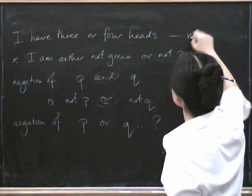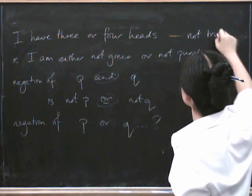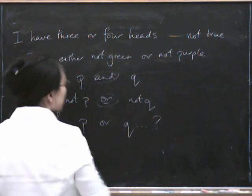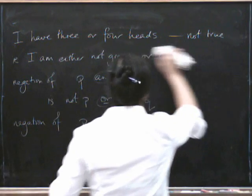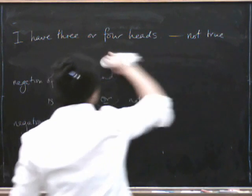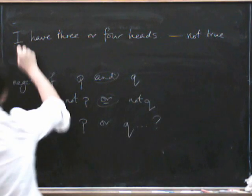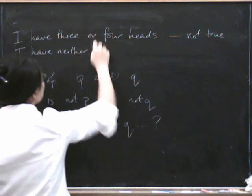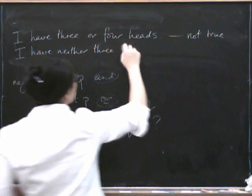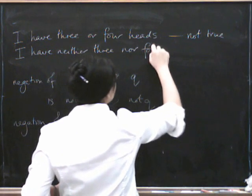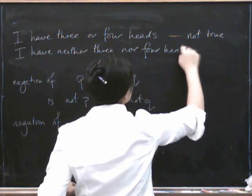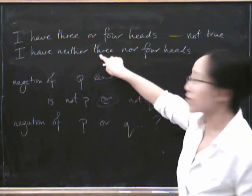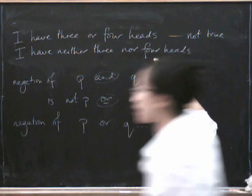This is not true because I have neither three nor four heads. But what does neither nor mean? It means I don't have three heads and I also don't have four heads.